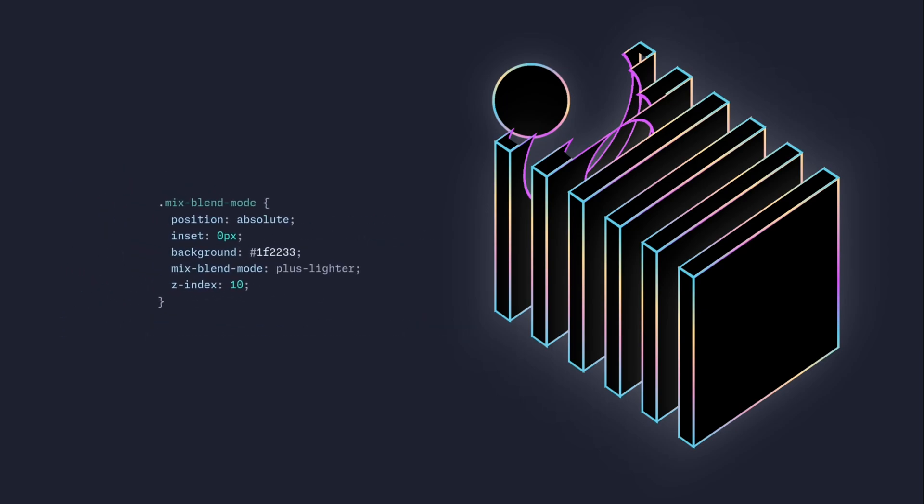The CodePen example also uses a mix blend mode, which we can create by overlaying an element using position absolute with inset 0 pixels. Then we set the background and apply a mix blend mode of plus-lighter and set the z-index.